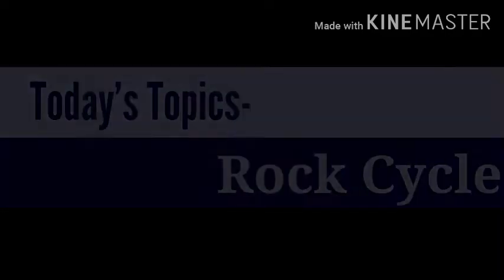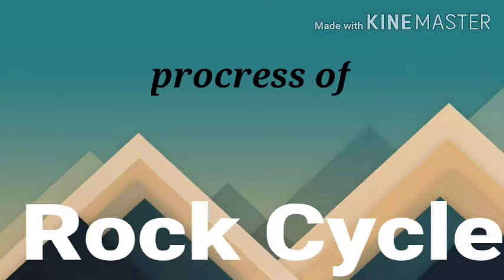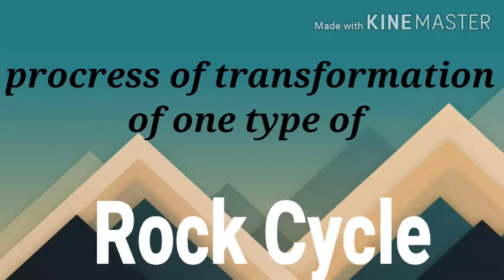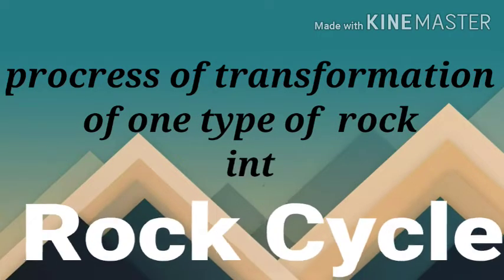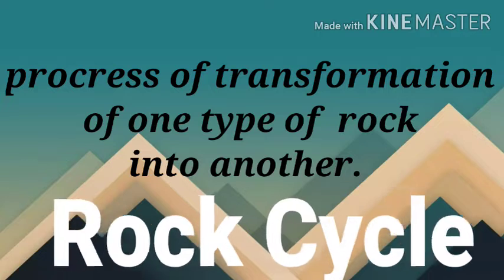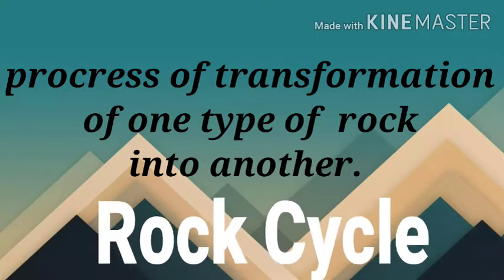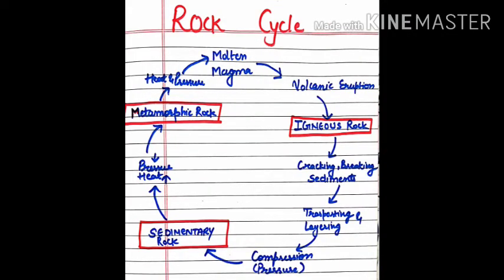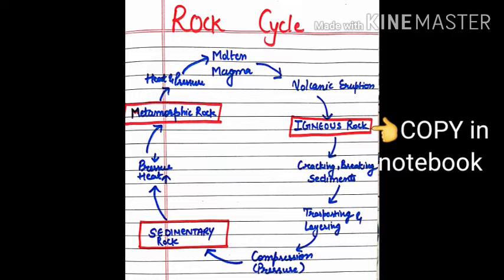What is the rock cycle? The process of transformation of one type of rock into another is called the rock cycle. This process takes hundreds of years. The term 'cycle' means cyclic manner. The cyclic manner means that after transformation, a thing changes back into its original form.